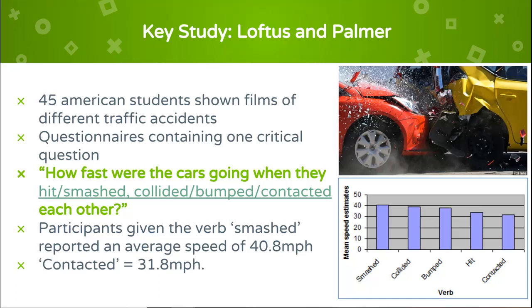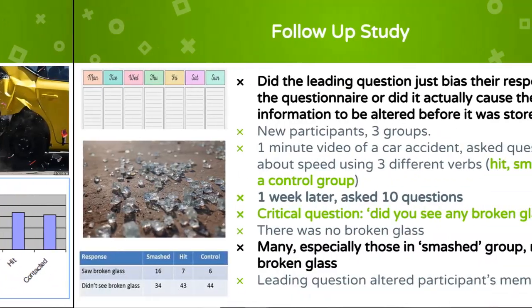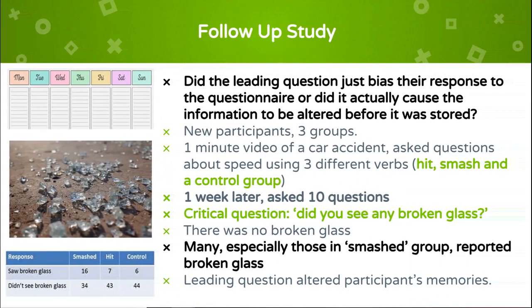However, did the leading question just bias their response to the questionnaire, or did it actually cause the information to be altered before it was stored? There was a second procedure to test this. New participants were divided into three groups. They were shown a one-minute video of a car accident and asked questions about speed using different verbs.